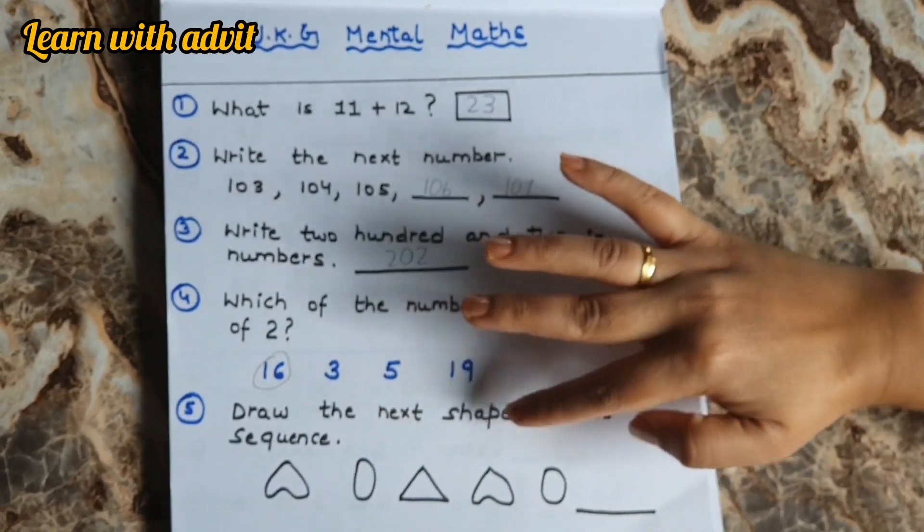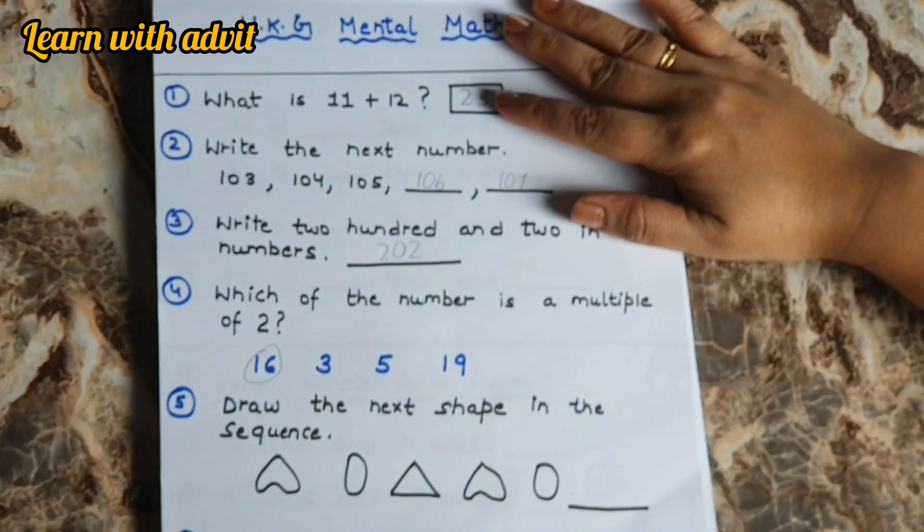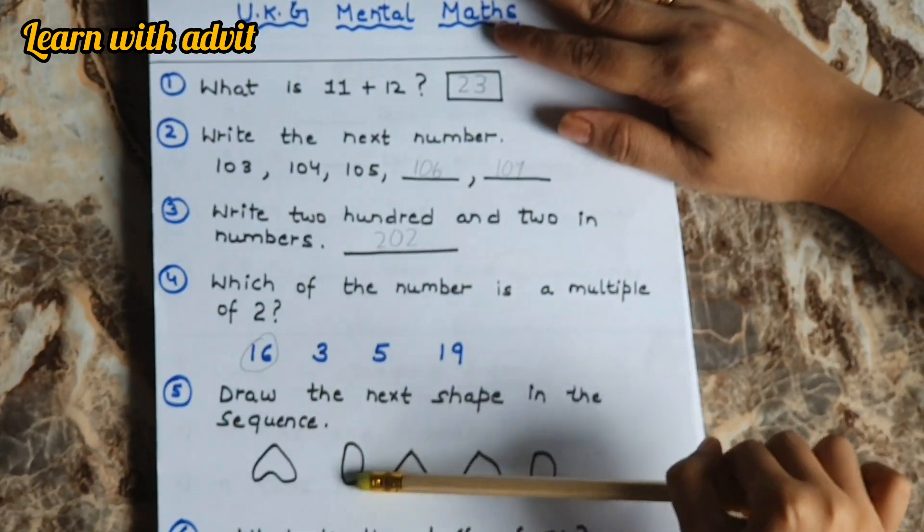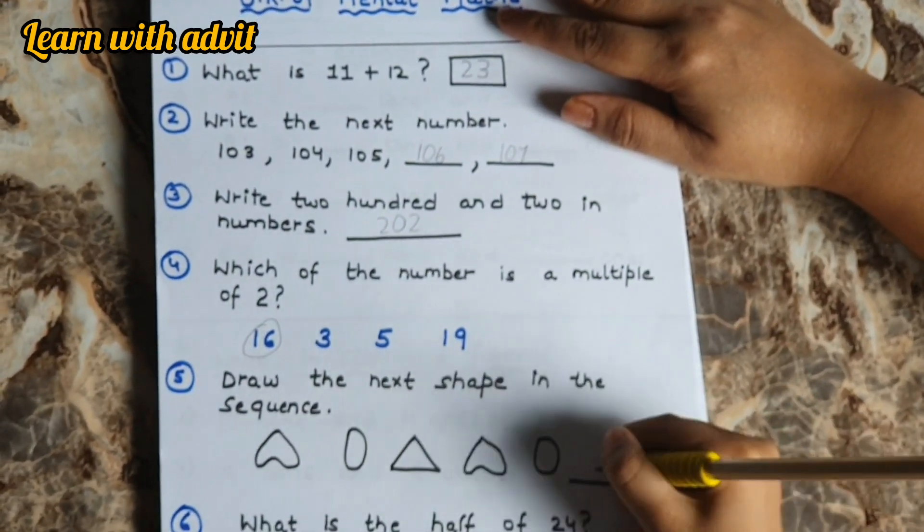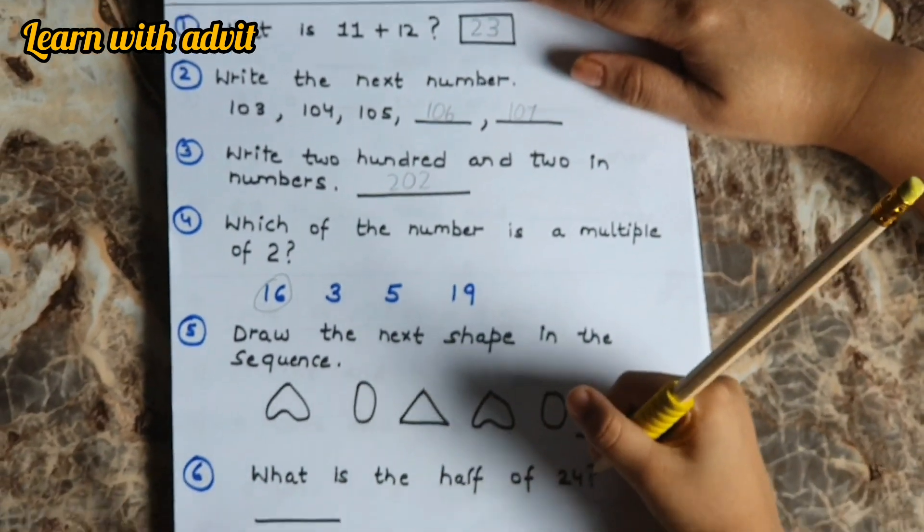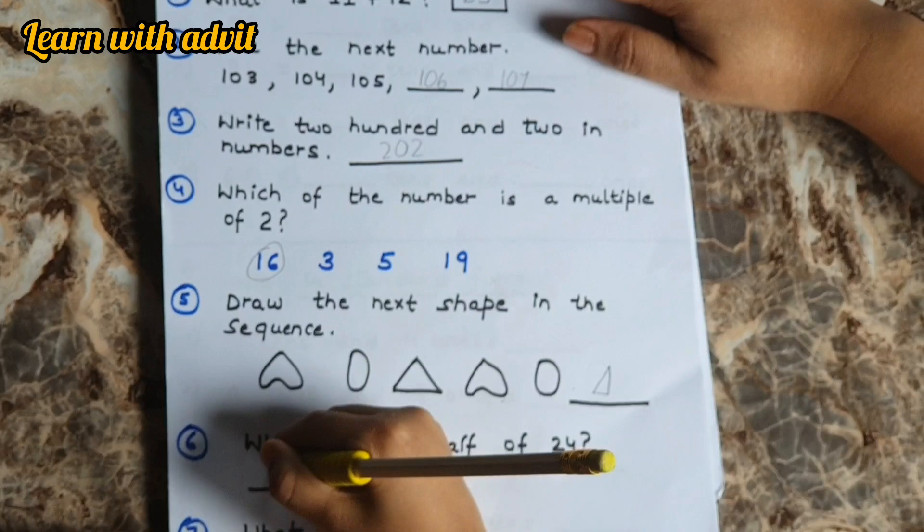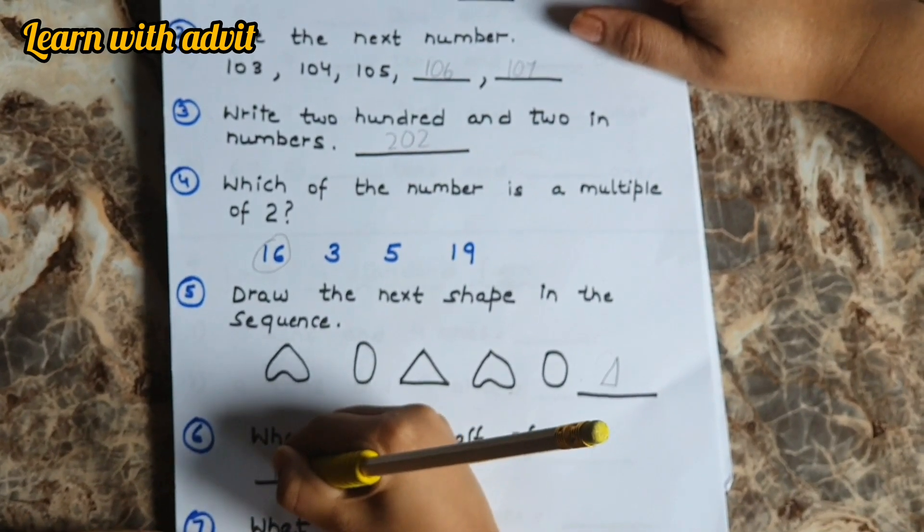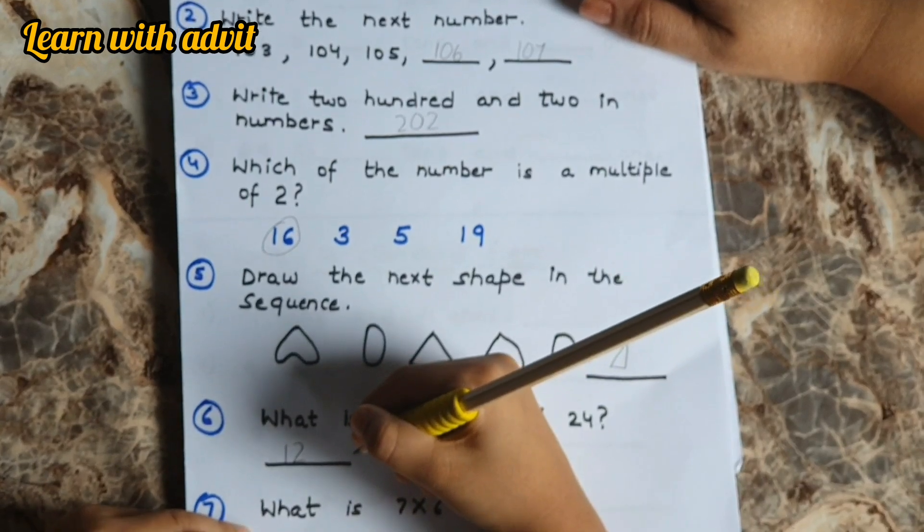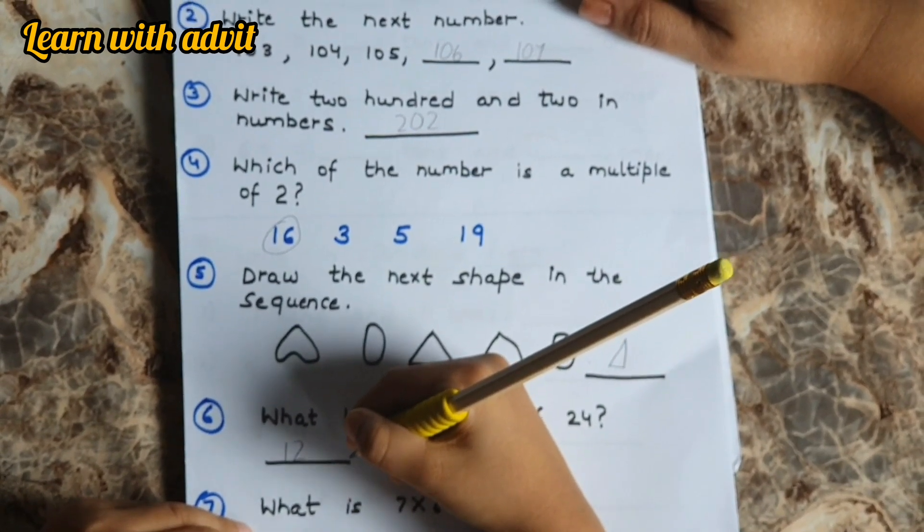Which of the number is a multiple of 2? Draw the next shape in the sequence. What is this? What is the sequence? Heart over triangle, heart over triangle. What is the half of 24? 12. What is the half of 18? Half of 18 is 9. What is 7 into 6?